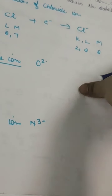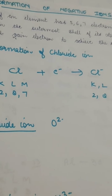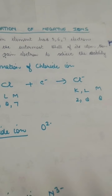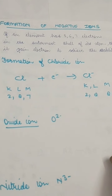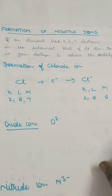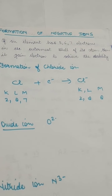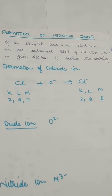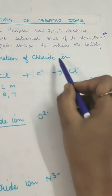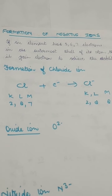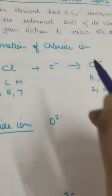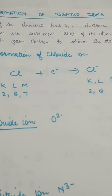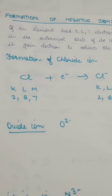In the case of negative ions, the atom will accept electrons. In the formation of the chloride ion, when chlorine accepts the electron we don't call it chlorine ion but we call it chloride ion. Same in the case of hydrogen - when hydrogen accepts the electron we call it hydride ion, and when it donates the electron we call it hydrogen ion.